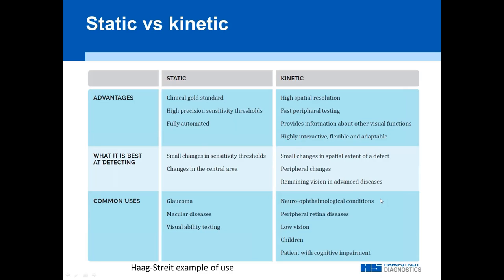So when to use what? Static is really the clinical gold standard because it's great for getting very precise thresholds, which is important for tracking very slow glaucoma progression. That's one of the key reasons why it's the standard for glaucoma testing. For glaucoma and macular disease, we test just a small area, which static sampling handles nicely. It's also great for visual ability testing like driving tests.